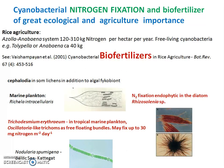Cyanobacteria can perform nitrogen fixation and act as a biofertilizer of great ecological and agricultural importance. One example is in rice agriculture: Azolla is a water fern and Anabaena is a cyanobacteria. This symbiotic relationship between Azolla and Anabaena can fix nitrogen and is well used in rice paddies. This is referenced from a publication on cyanobacteria as biofertilizer in rice agriculture.